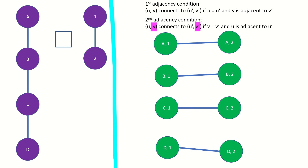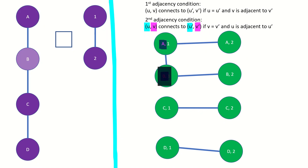For our second condition, where V equals V' and U is adjacent to U': starting with A1, we look for another vertex where the right entry is 1 and the left entry is adjacent to A — that gives us B1. Applying the same logic, we connect B1 to C1 and C1 to D1. We also connect A2 to B2, B2 to C2, and C2 to D2.